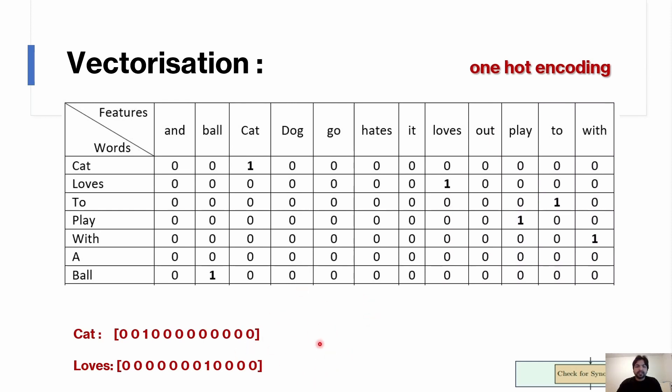This technique helps machines understand words in a numerical way, making it easier for them to process and analyze text. For example, if you see the example of 'cat' from this sentence, all other words were given zero identity and cat is given one identity. Hence, it got one-hot encoding like this.